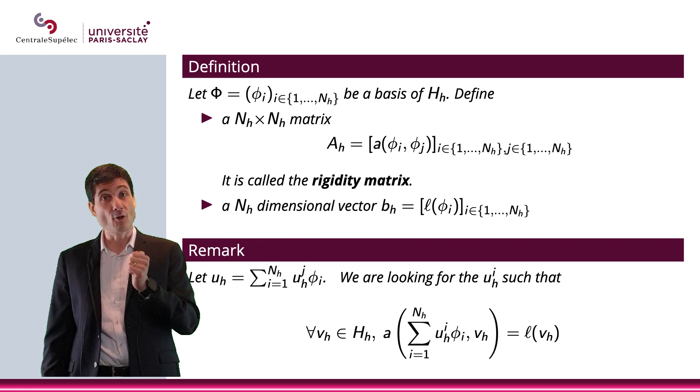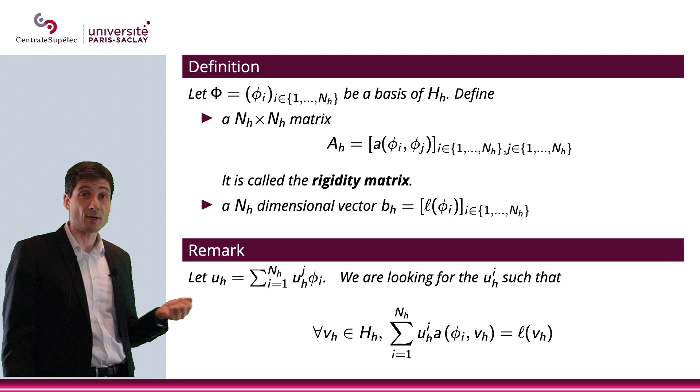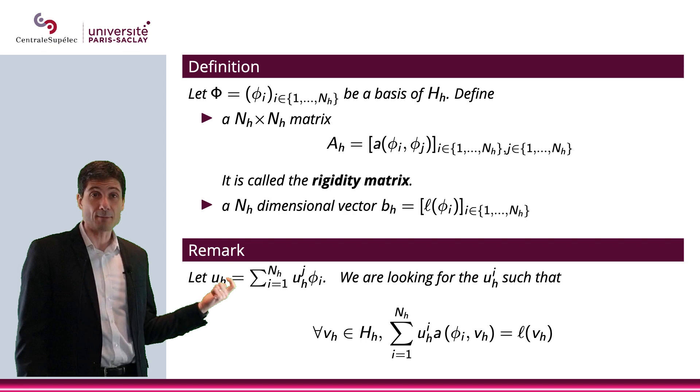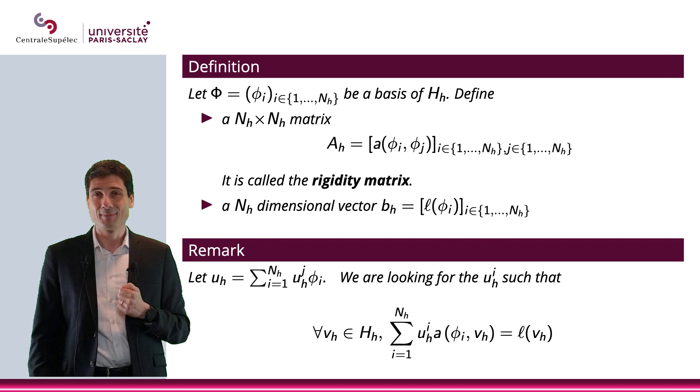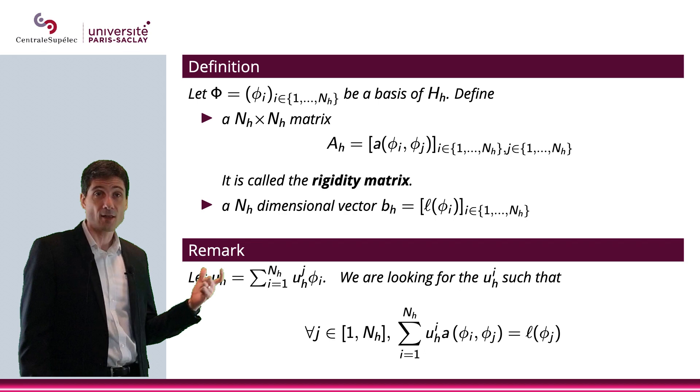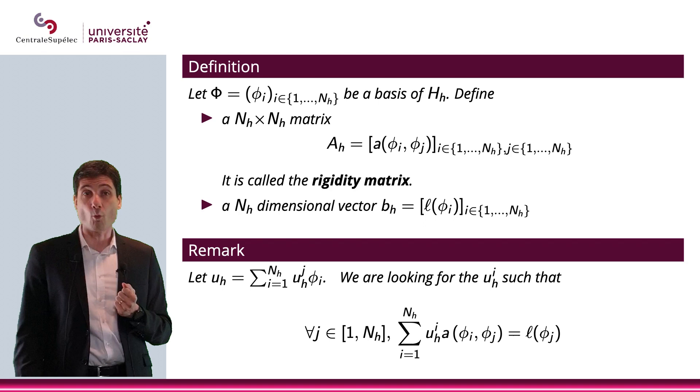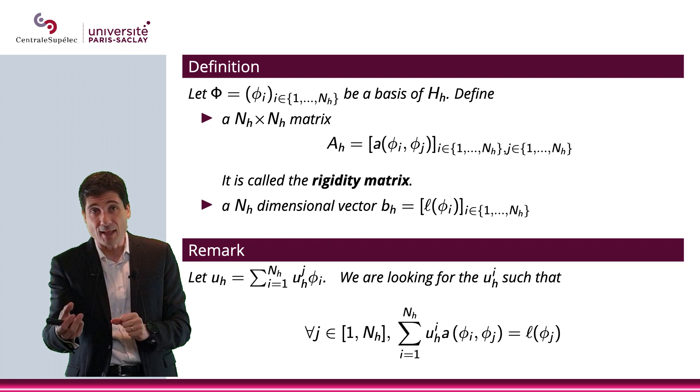Because a is a bilinear form, which means that it is, as a consequence, linear in its first variable, which means that it's basically the sum of the number uₕⁱ times a(φᵢ, vₕ) equals ℓ(vₕ). But that must be true for all vₕ in Hₕ. So, it must be true for every element of my basis. So, for all j in 1 to Nₕ, then I have this equality. And by the way, if I have this equality, I can actually recover my vₕ.